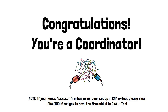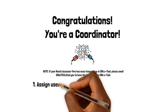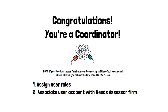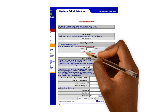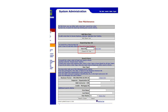Coordinators have the important job of granting users access to CNA eTool and assigning users roles for the site. Complete the following two steps for each user that will be working on your Capital Needs Assessments. These steps are the same as Steps 2 and 3 described previously. The first step is to assign the user roles within CNA eTool. Go to the User Maintenance screen from the main menu, enter the user's MID and click Search for User. You can also search by first and last name. After a successful search, click on their MID and verify that you've selected the correct MID before proceeding.